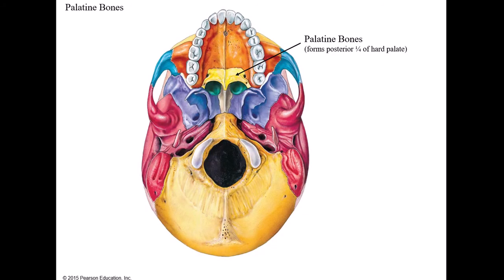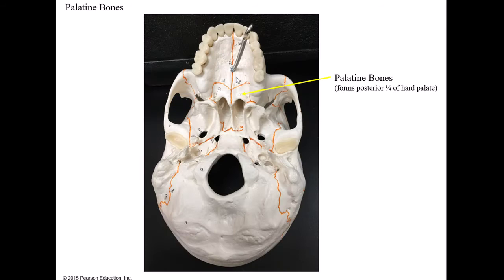The next two bones are the palatine bones. They form the back one quarter of the hard palate. The palatine process of the maxilla forms the front three quarters, while the palatine bones form the back one quarter. We have two palatine bones, and here they are on the skull model.